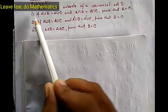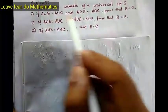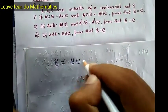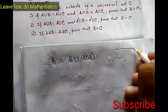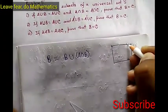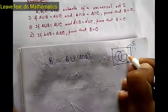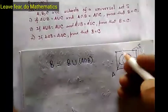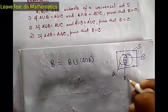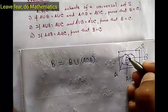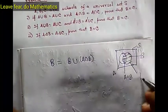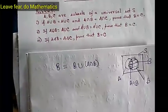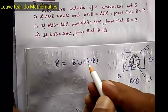Now let us solve Problem 1. We have to prove that B equals C under the given conditions. We can write B equals B union (A intersection B). Looking at the Venn diagram, suppose this is our universal set S, this is A, and this is B. This region stands for A intersection B. So B can be written as B union (A intersection B). That is why we have written B equals B union (A intersection B).